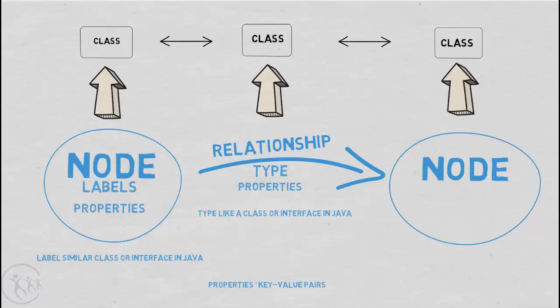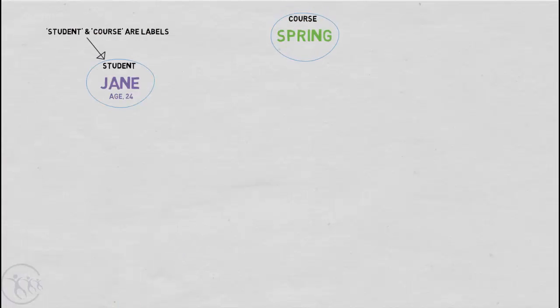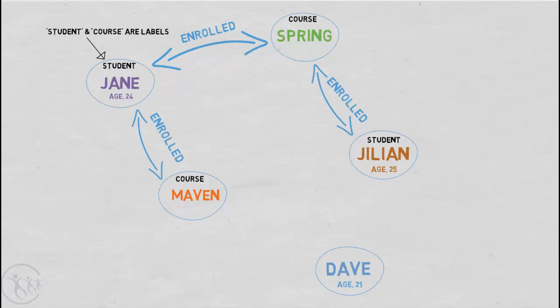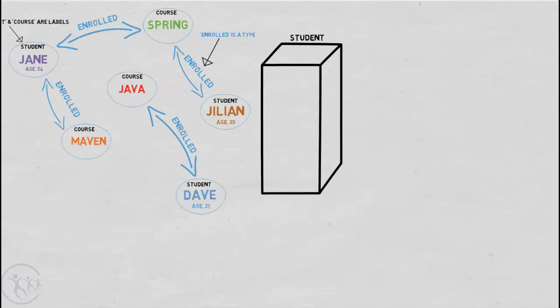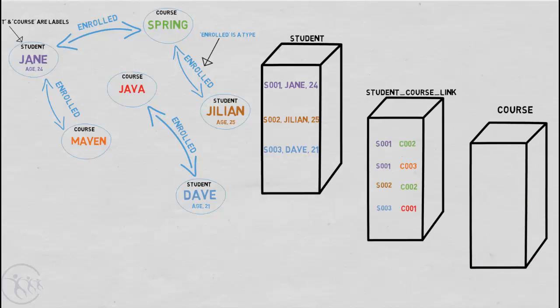So our previous example of a relationship many-to-many mapping would look like this in a graph database. We have our students and we have our courses. And this is how we're linked together via relationships. And you'll notice that the relationship has the type of enrolled. This makes it much clearer and the understanding much clearer than having just foreign keys associated together in a table.